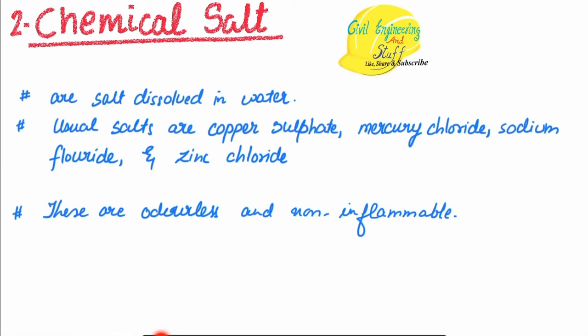Next, we have chemical salts which are soluble in water — for example, copper sulfate, mercury chloride, sodium chloride, and zinc chloride. These are mixed in water and the coating is applied over the timber surface. These salts are odorless and non-inflammable and have proved to work in a very satisfactory way.